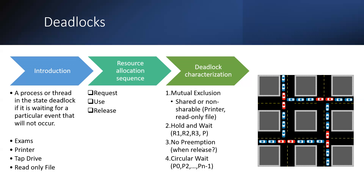The third condition is No Preemption. R1 will be free and there is a process requesting R1, but it must wait until the current process completes. The three resources will not be preemptively released; that particular process needs to wait to complete before resources are released.